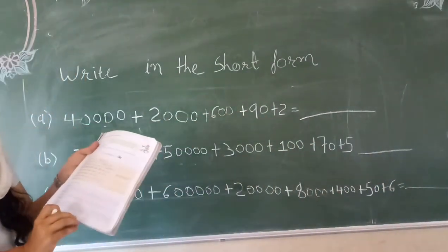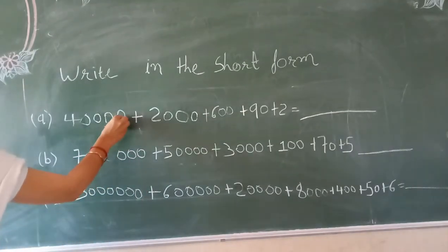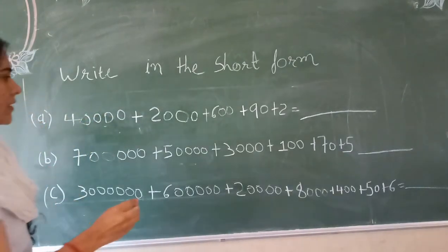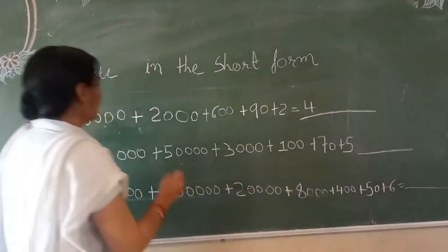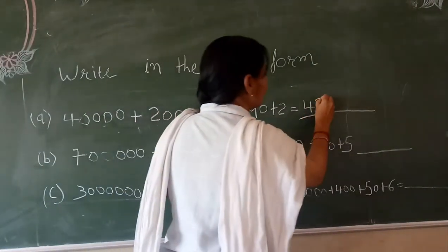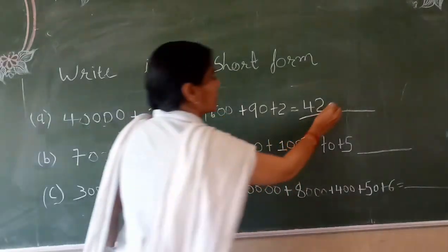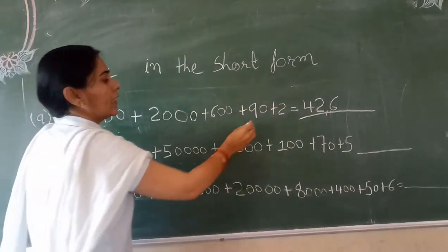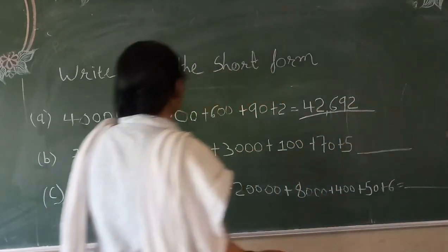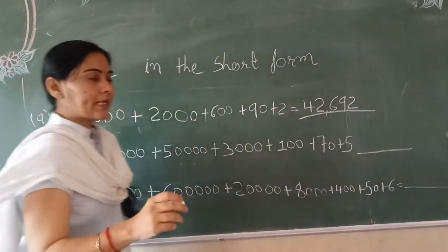Exercise 3a is in your textbook page number 11. First one: write in standard form. We start with the last place: one place, ten, hundred, thousand, ten thousand. Here in the ten thousand place there is 4. Plus thousand place there is 2. Plus hundred place there is 6. Plus ten place and one place that is 9 and 2. So 40,000 plus 2,000 plus 600 plus 90 plus 2. That is 42,692.